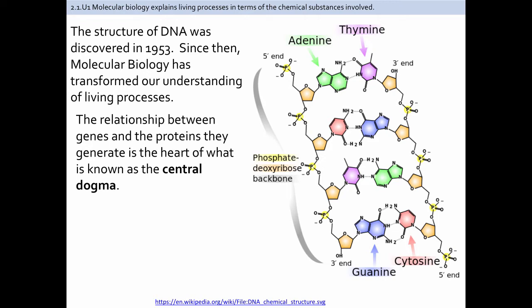One of the first introductions to molecular biology was when the structure of DNA was elucidated by Watson, Crick, Wilkins, and Franklin in 1953. Since then, molecular biology has really done a great job of transforming our understanding of living processes. One of the key tenets of molecular biology is what's called the central dogma — the relationship between genes and the proteins they generate — that information in living systems flows from DNA to RNA to proteins. This is a really important idea in biology.